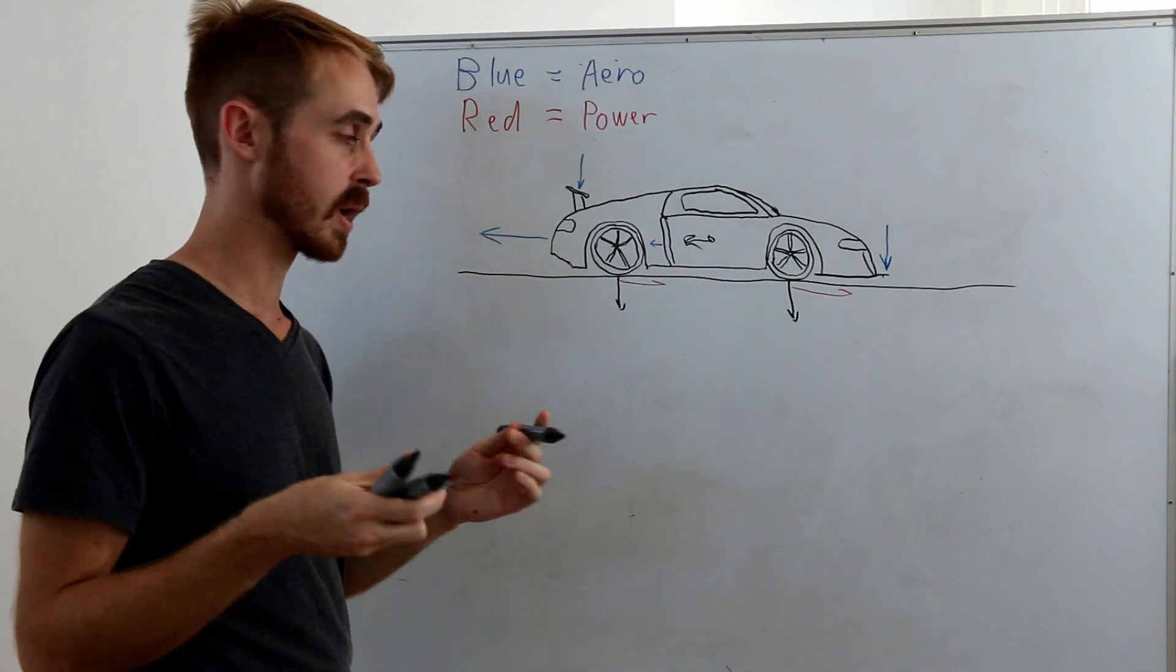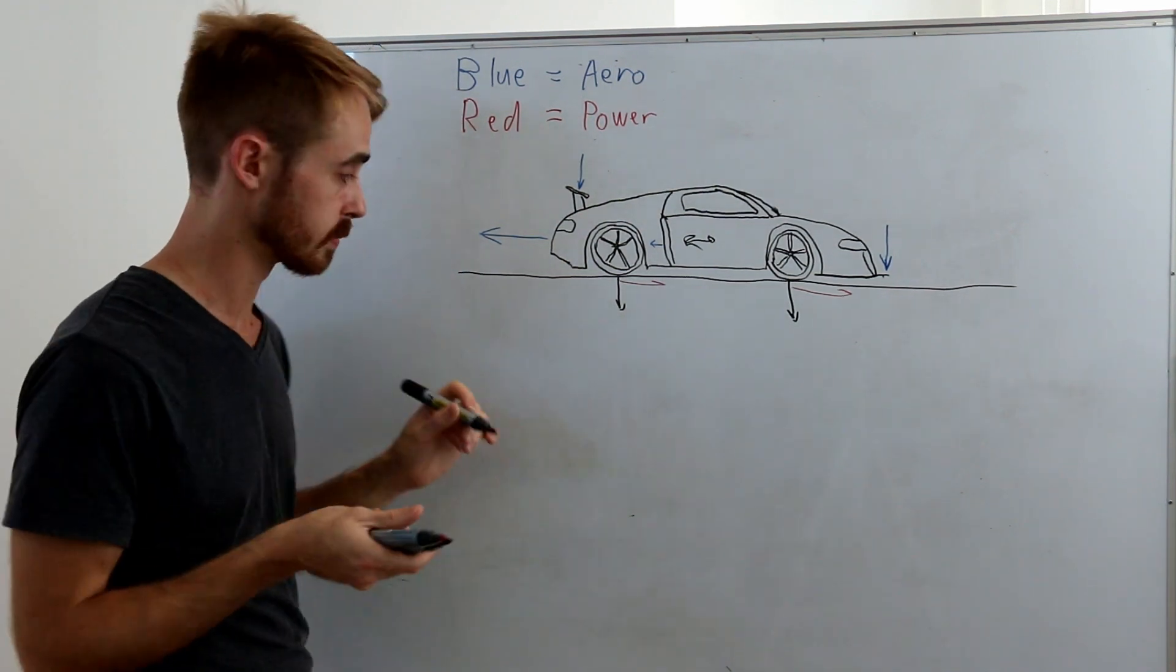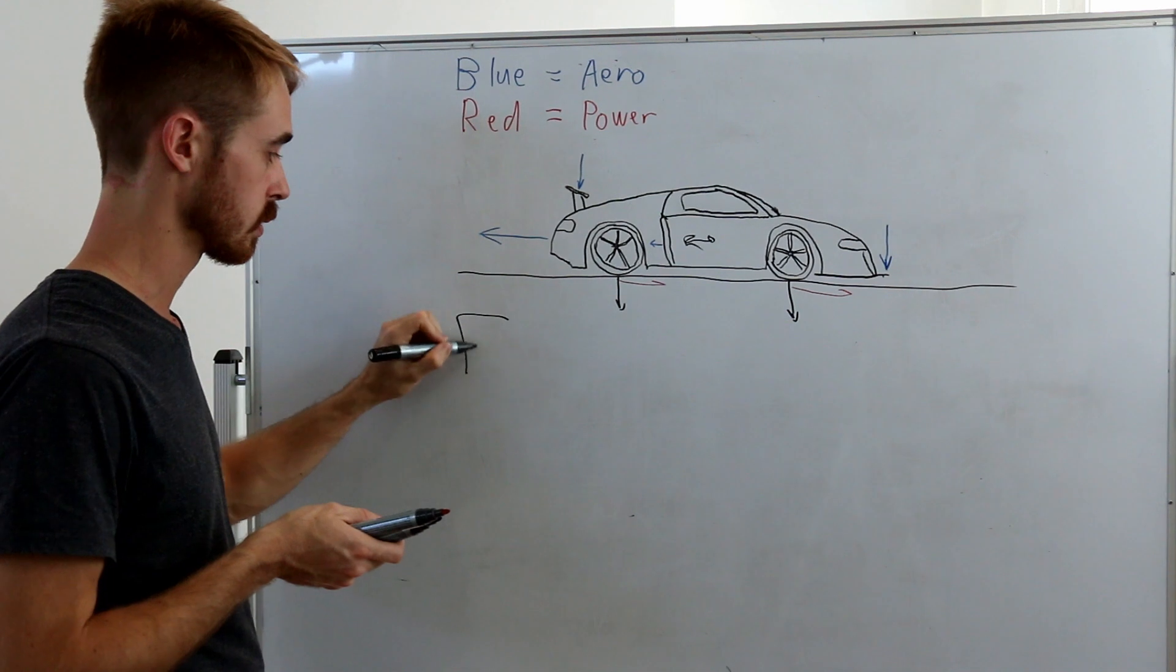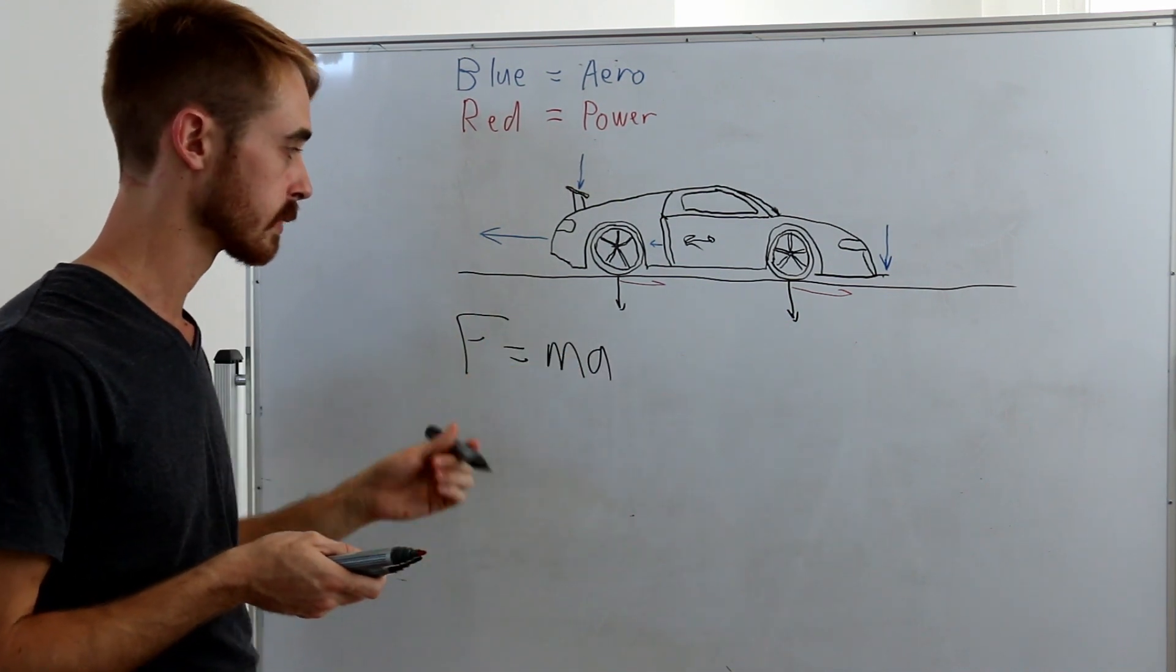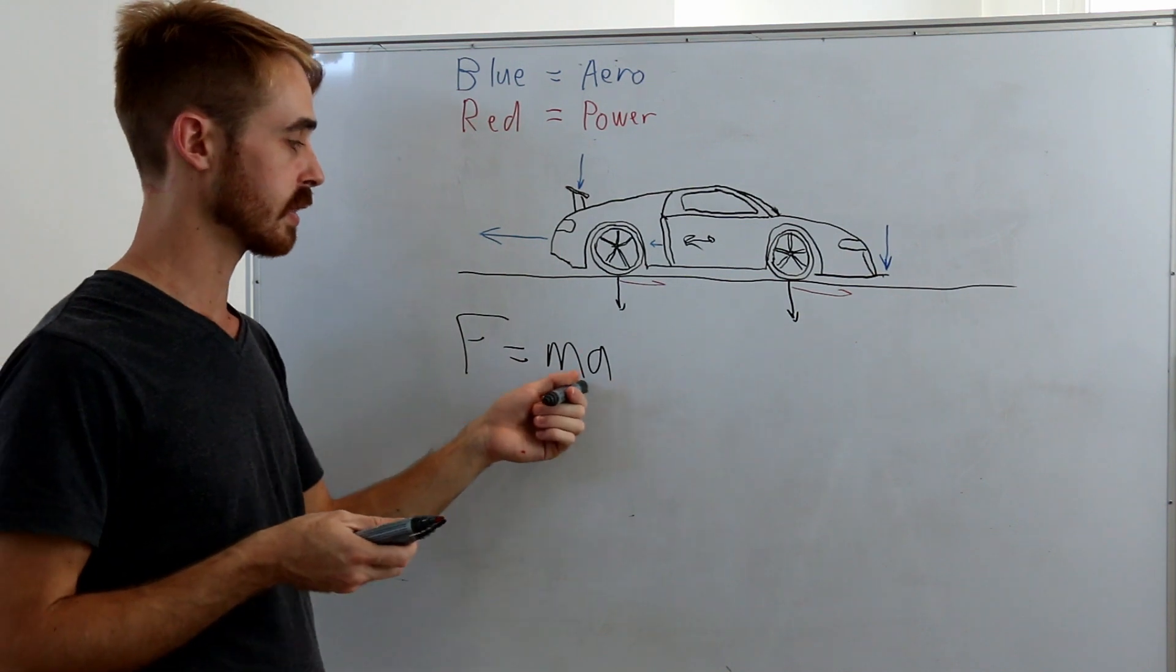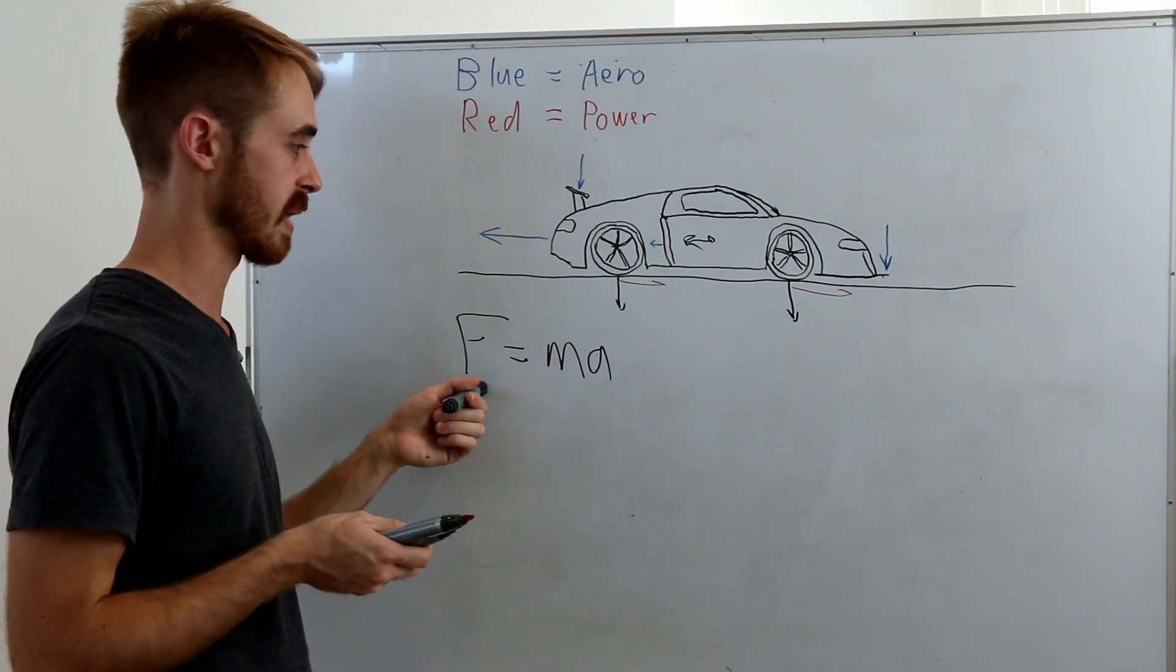To look at what the equations are for this, they're very simple. The most common one from Newton's laws: F = ma. That describes the acceleration of the car as a result of its mass and its force.